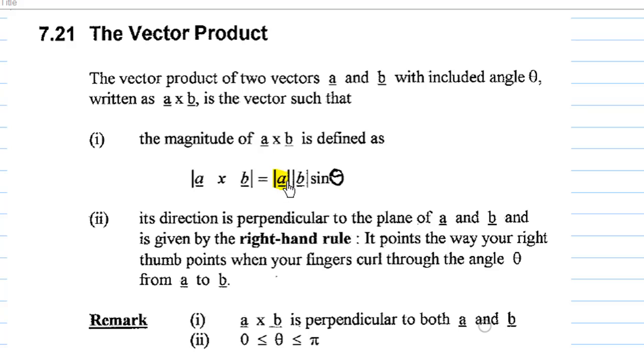magnitude of a times the magnitude of b times sine of theta, where theta is the angle between a and b.